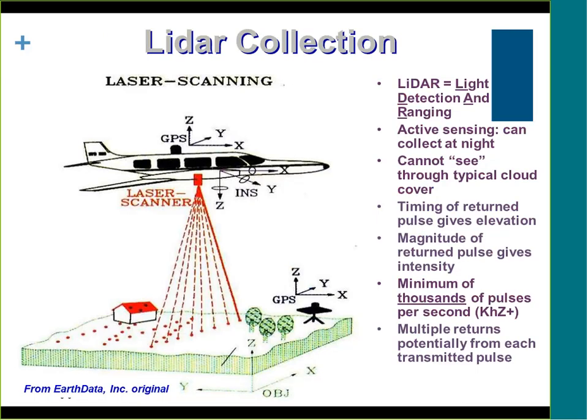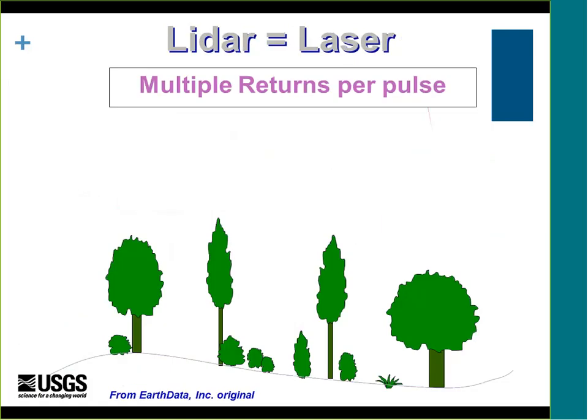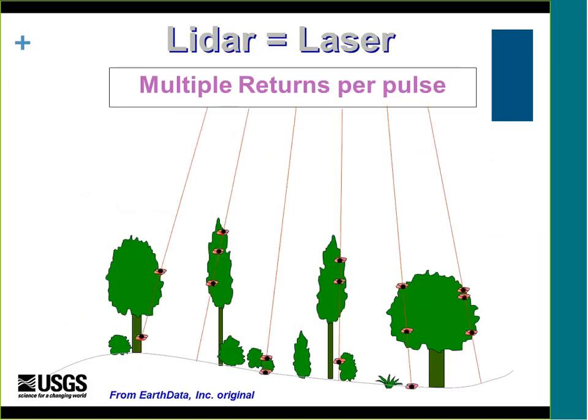LiDAR stands for light detection and ranging. The laser scanner sends out pulses — about a minimum of 1,000 pulses per second — with multiple potential returns from each pulse. It's the timing of these pulses that gives us the elevation value.